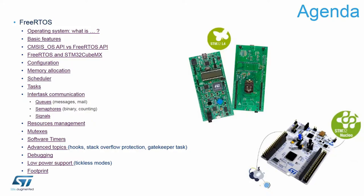We will demonstrate the main debugging components available within two toolchains — IAR and GCC — based on an STM32CubeIDE example, and discuss low power support implemented within FreeRTOS. At the end you will see basic information about the footprint of FreeRTOS and its comparison with other operating systems for embedded applications without MMU.